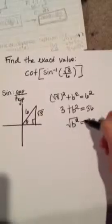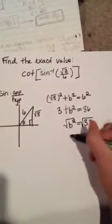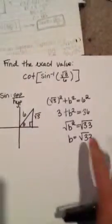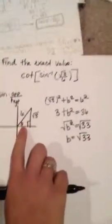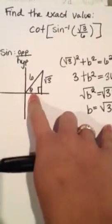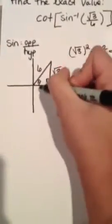Now to get b squared by itself, you minus 3 from both sides so you get 33. So b squared equals 33. You want to square root each side, you get b by itself equals square root of 33. So now you know that the last part of the Pythagorean Theorem is b equals square root of 33.